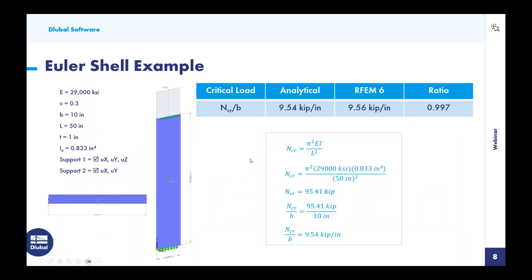Moving on to our second example, this is very similar to the column but using a 2D surface element — 10 inches wide by 50 inches tall, with a modulus of elasticity of 29,000 KSI and a thickness of 1 inch. The boundary conditions are a pin at the bottom and a roller at the top. Using the Euler formula for this surface, the critical buckling load as a force per unit length is approximately 9.54 kips per inch. We then open this example in RFEM, where the FE mesh is visible on this 2D object, and a 1 kip per inch load is applied at the top.